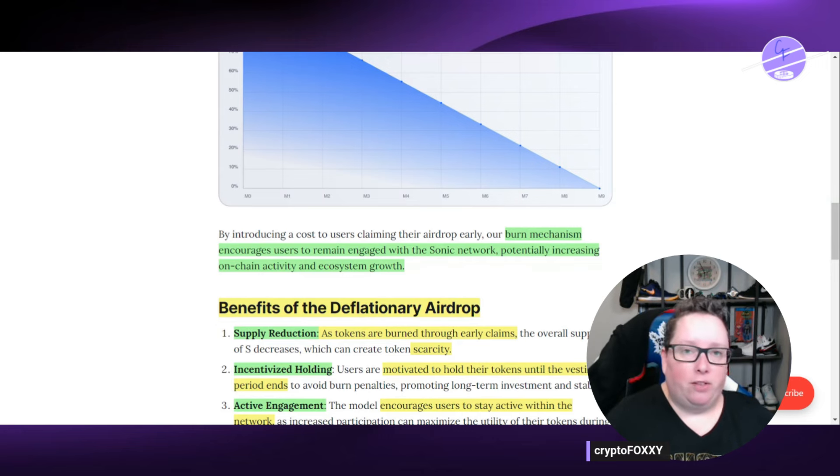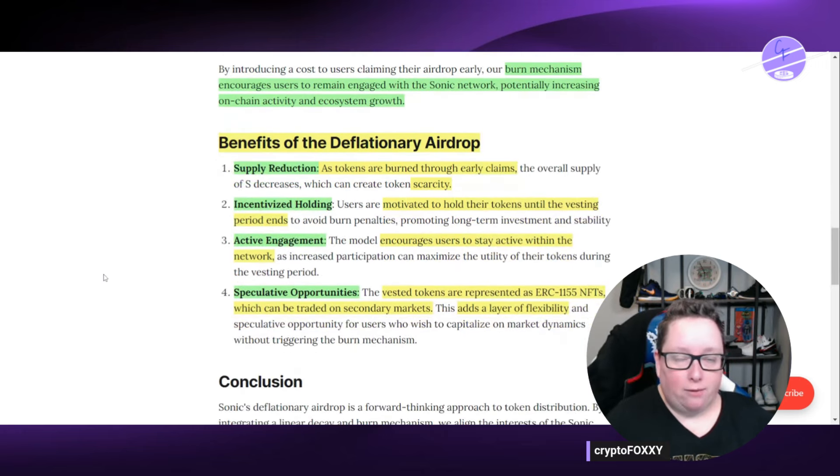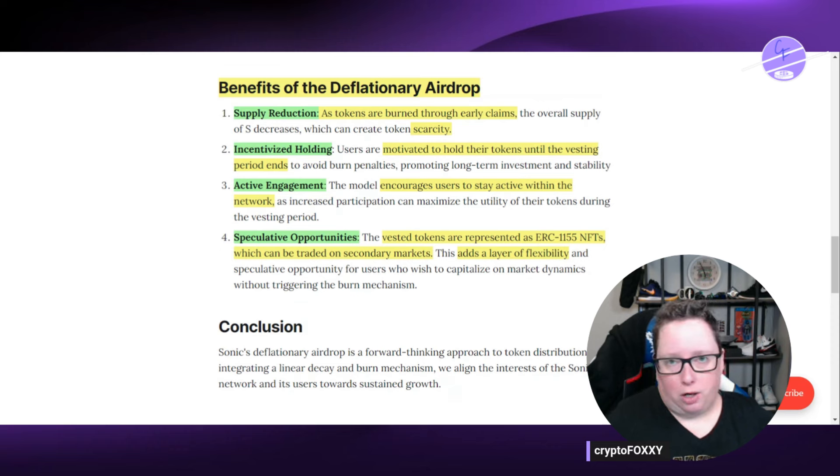So the benefits of this deflationary airdrop. They're going to have a supply reduction. Obviously, that's what the burn mechanism is going to be done with through early claims. So if you claim early, you're going to burn some tokens, and this is going to create scarcity. Potential obvious price increase from that as well, because it's kind of a supply and demand thing with tokens.